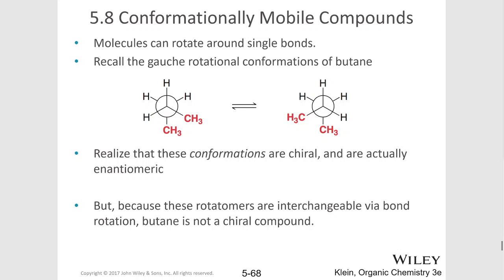Hello and welcome back. Just in case you're curious, molecules can have conformations that are chiral. For example, remember the gauche conformation of butane. These conformations are essentially enantiomers of each other, but because the molecule exists in these conformations by rotating about a single bond, it exists in many, many different rotations at room temperature, including both of these. And so the solution of this molecule is going to be achiral because these rotamers are interchangeable via bond rotation. So butane is not a chiral compound.